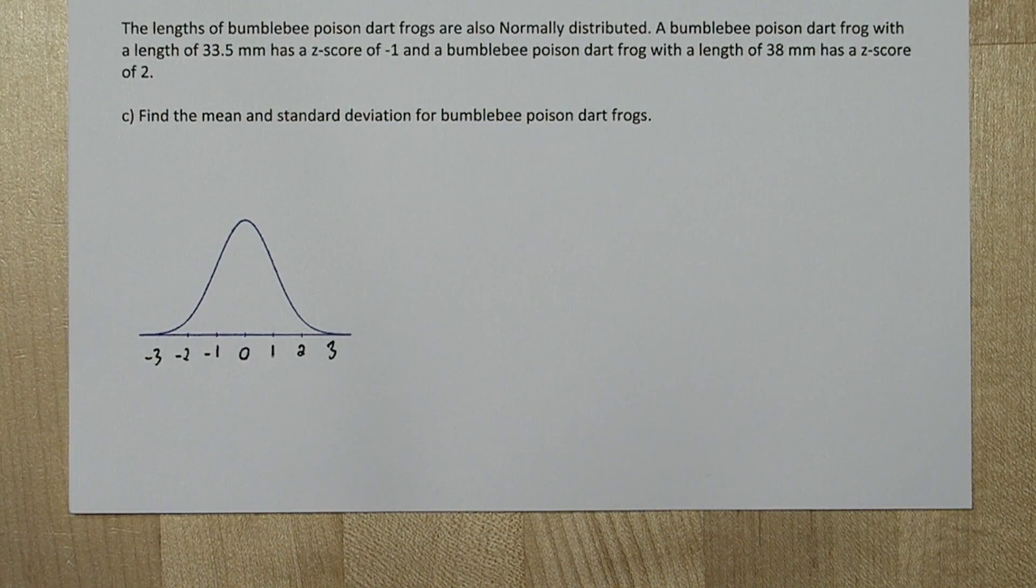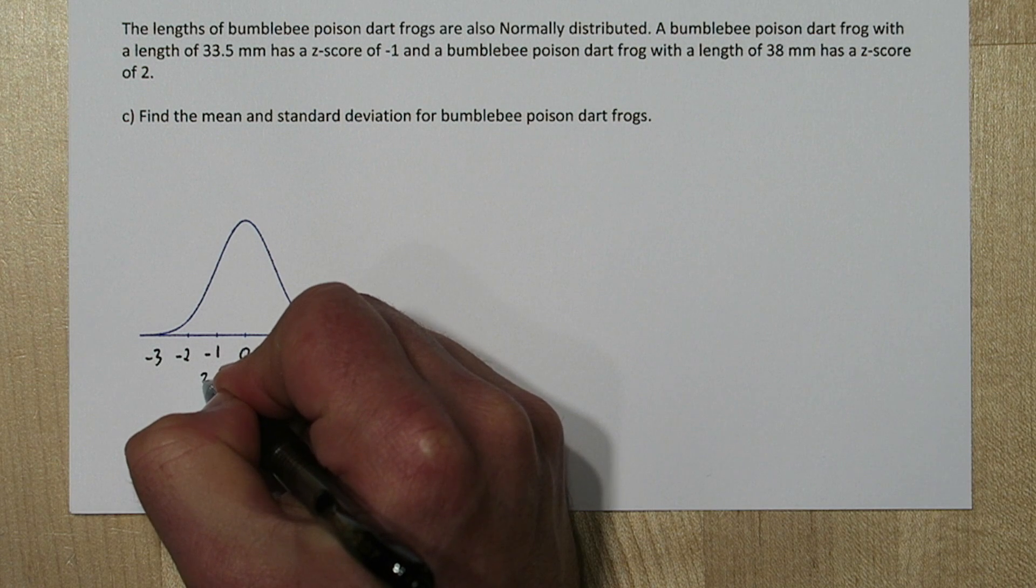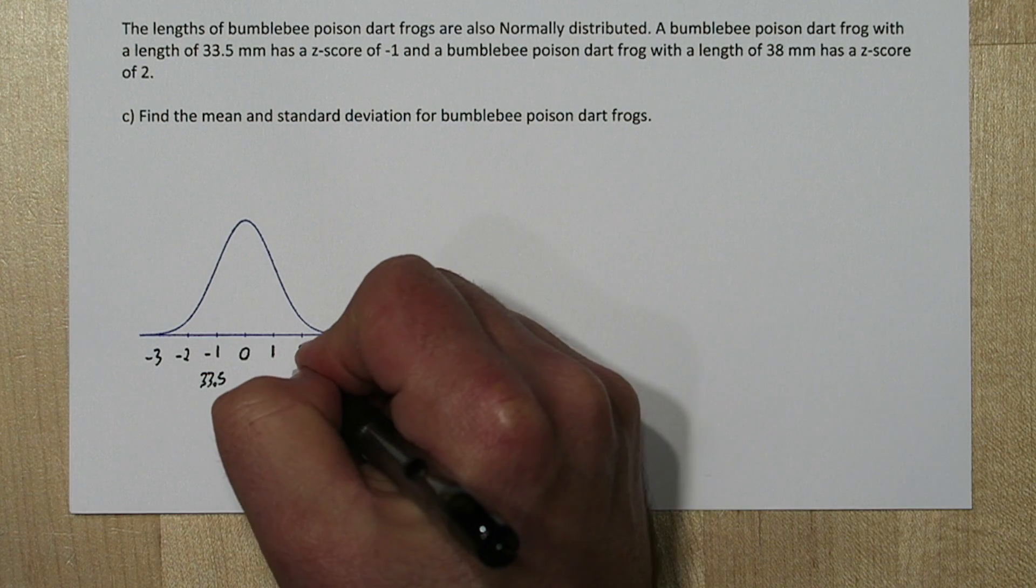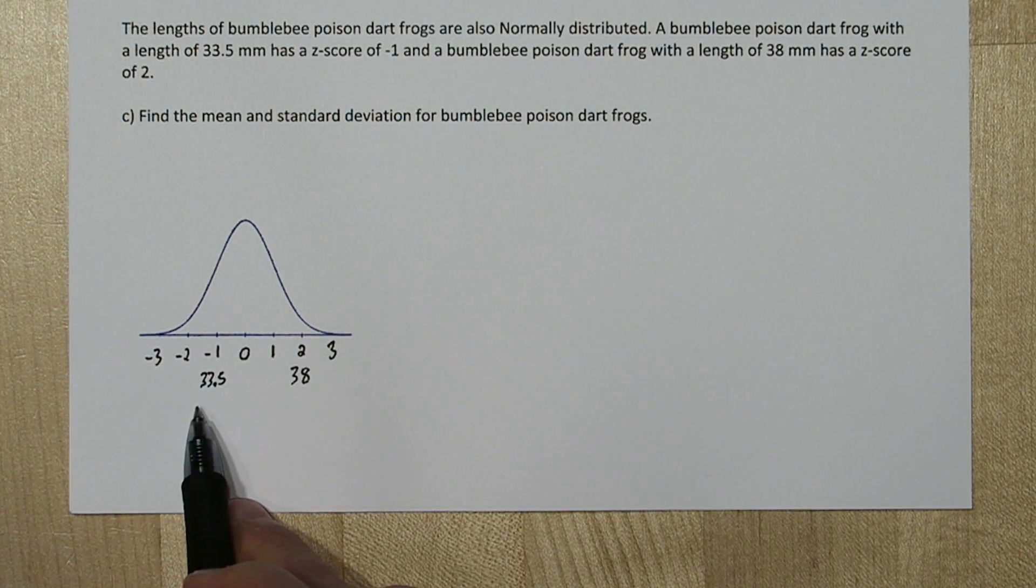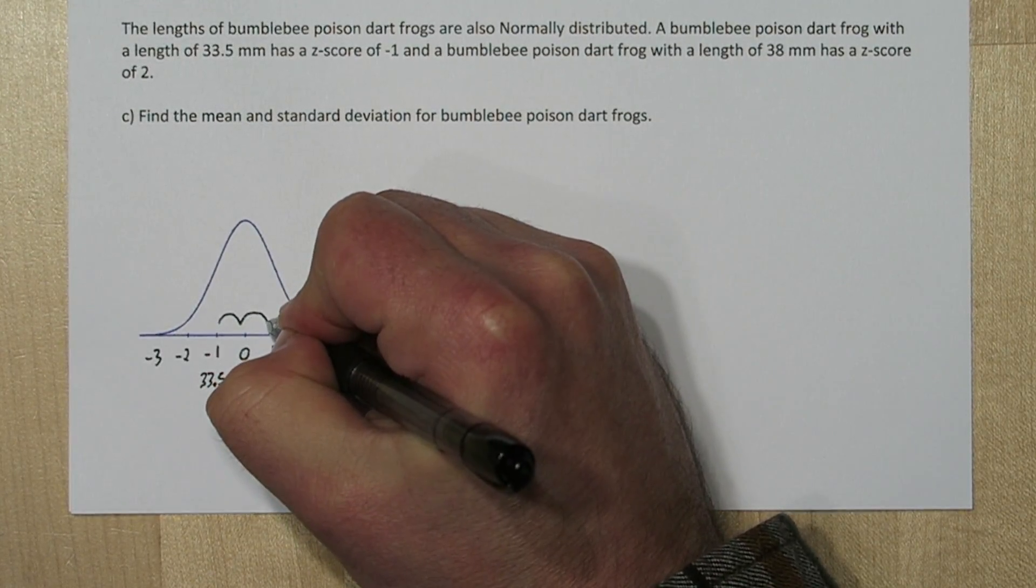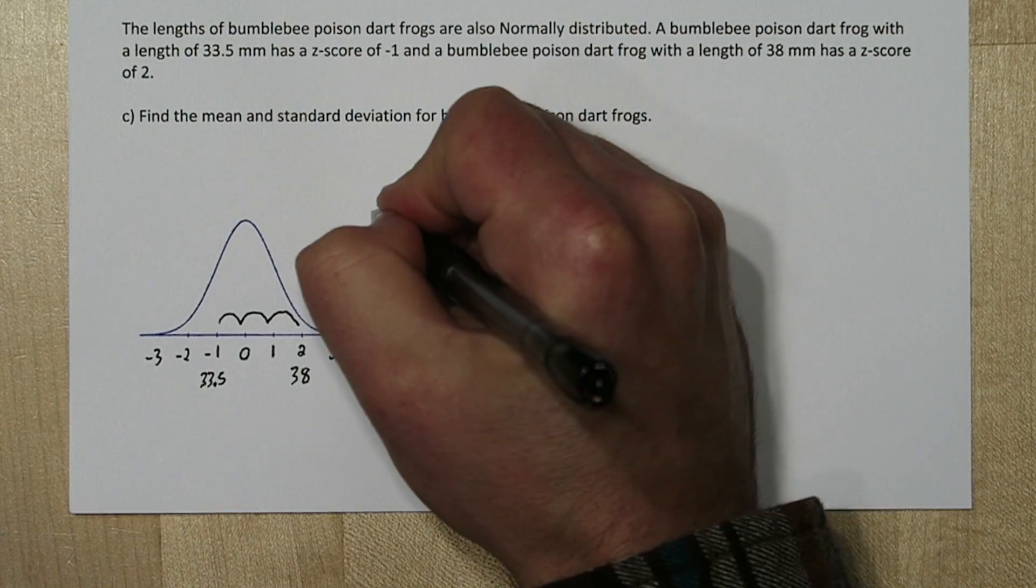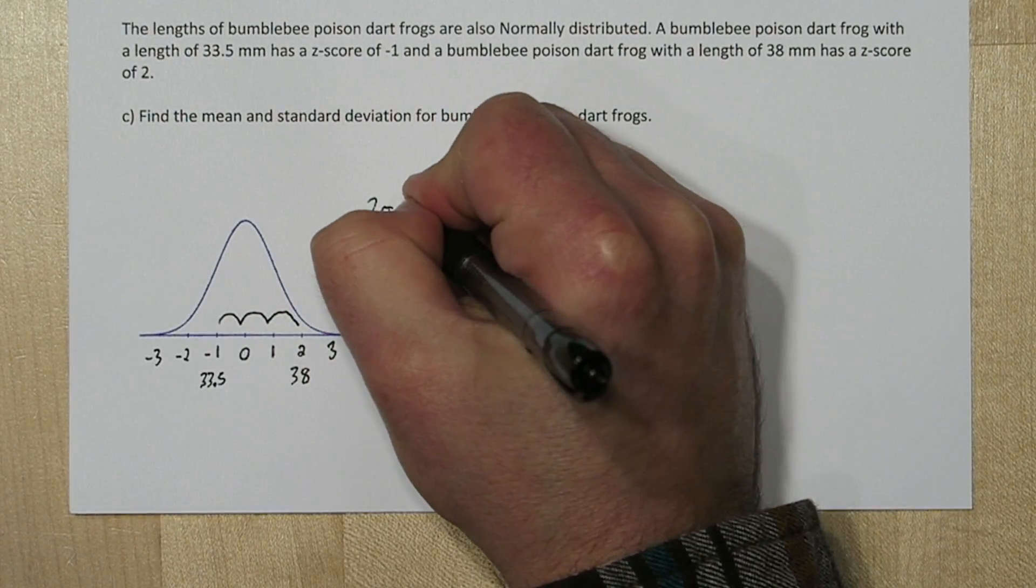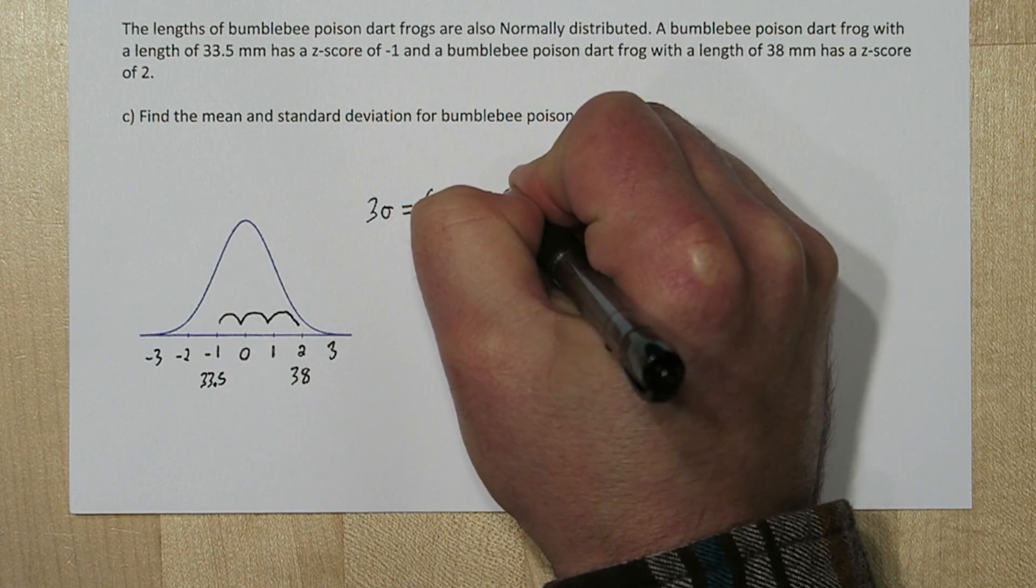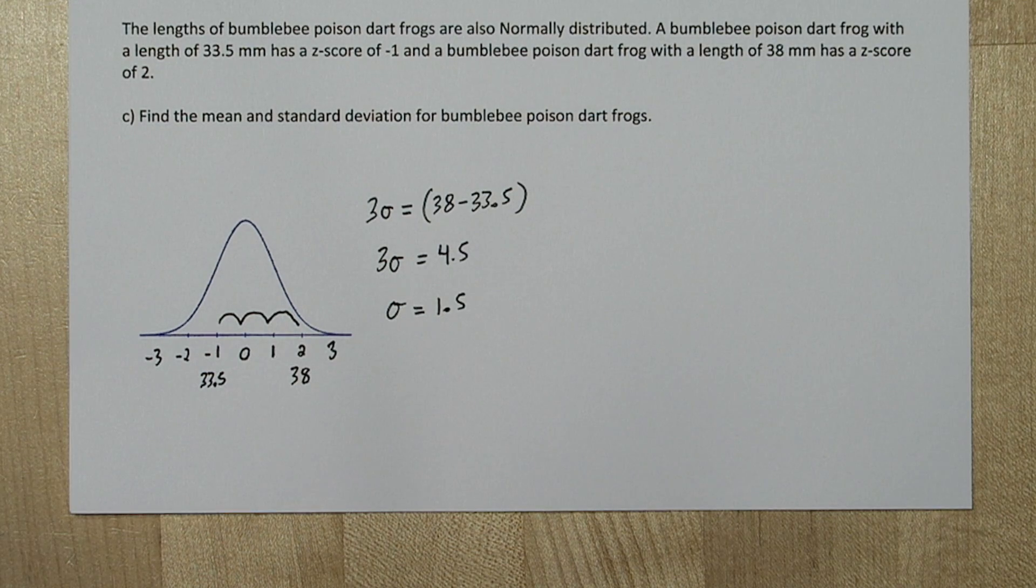So from the stem of the problem, we have a z-score of negative 1. So below the negative 1, I'm going to put 33.5. And 38 is a z-score of 2. Now from this 33.5 to this 38, we have 1, 2, a total of three standard deviations. So we know three standard deviations equals the difference between 38 and 33.5. And we can use algebra to figure out the standard deviation is 1.5.